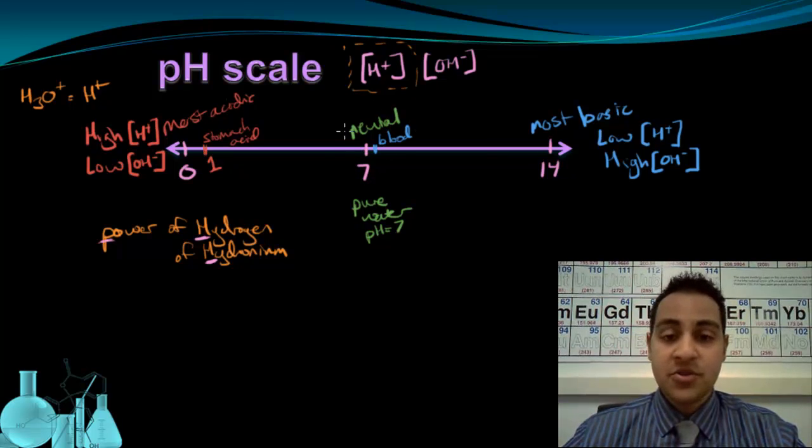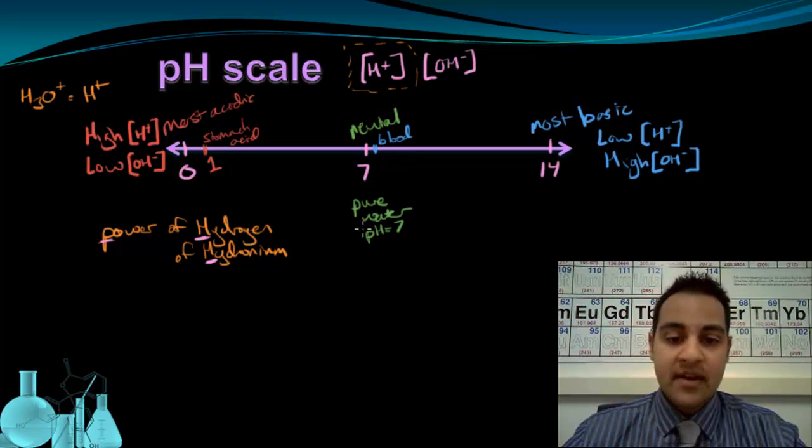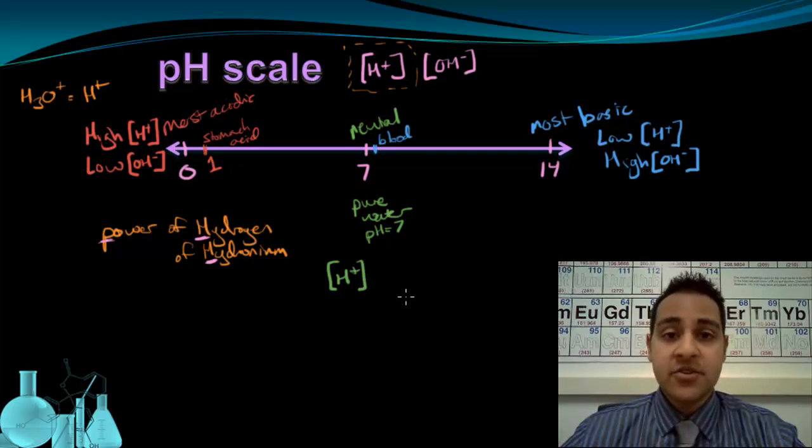anything with a pH of 7, something that's neutral, so pure water or a solution that has a pH of 7, anything at 7 will have a concentration of H+ ions, hydrogen ions, that exactly equals the OH- ion, the hydroxide ion concentration.